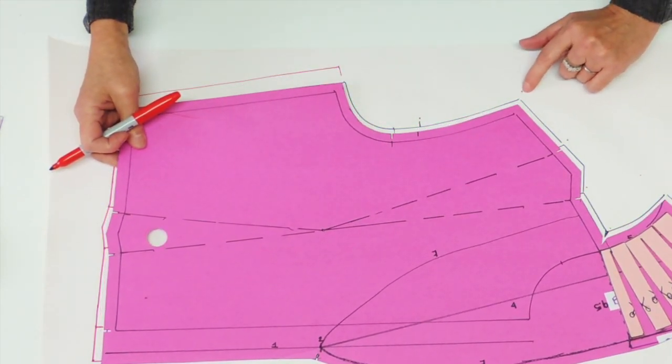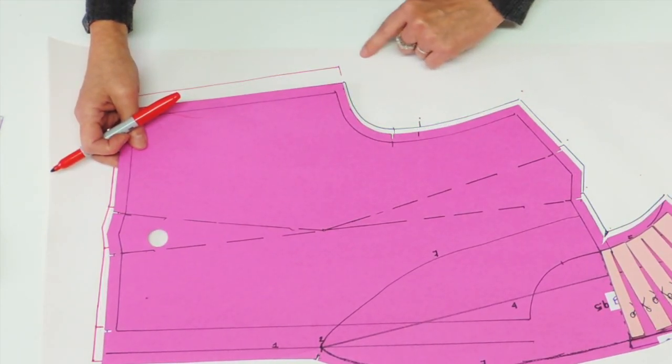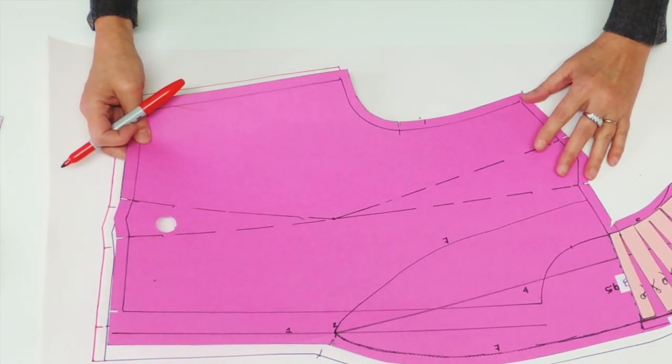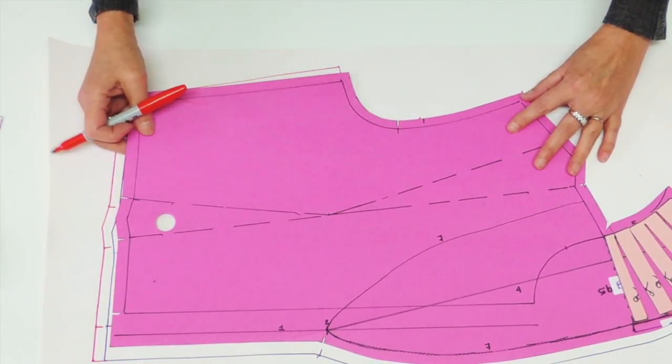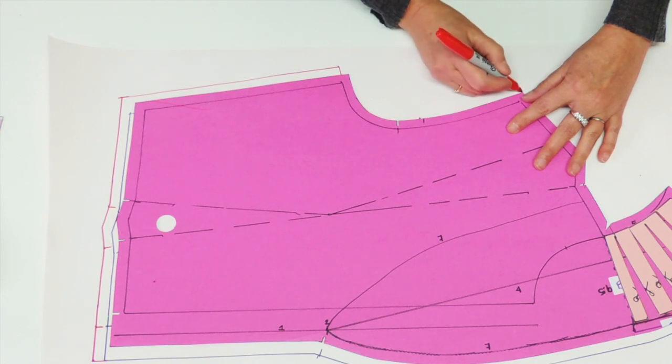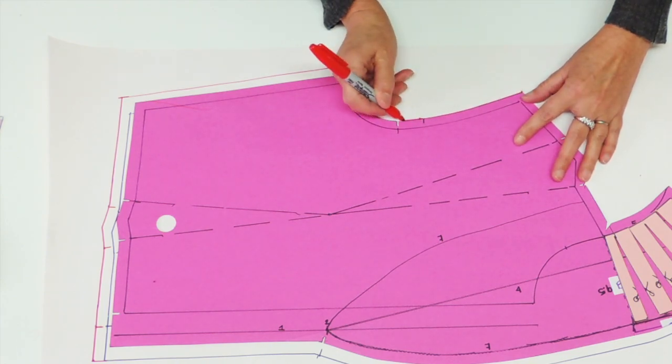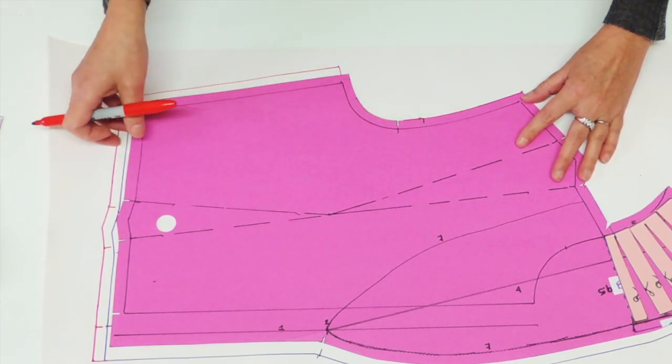I'm now going to do the armhole but from the top to the bottom, so shoulder and armhole point until the shoulder blade area. And you continue for a little while, stop before the notch.